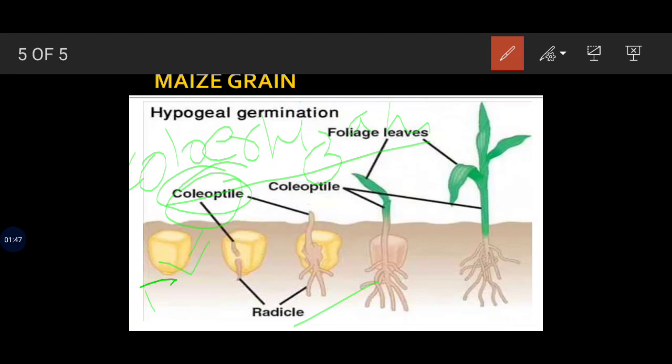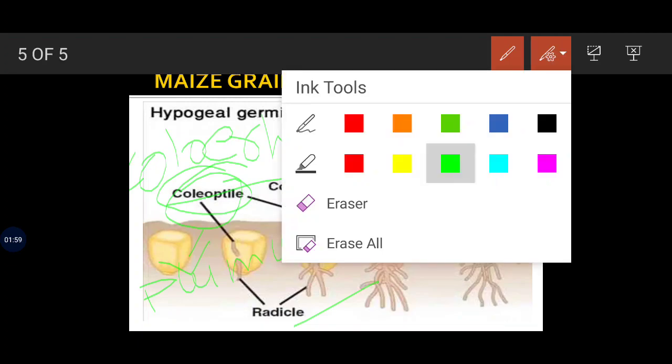So there are two protective sheaths - one is coleoptile for the plumule, another is coleorhiza for the radicle. Students, here I would like you to note one more important thing - in this case, the plumule and radicle peer out.